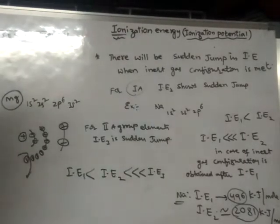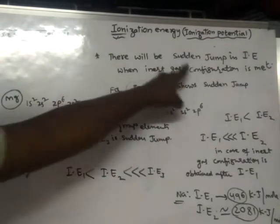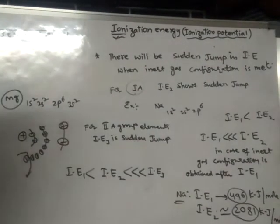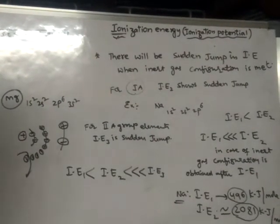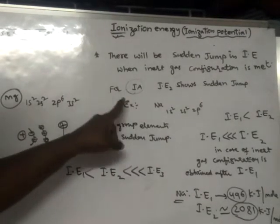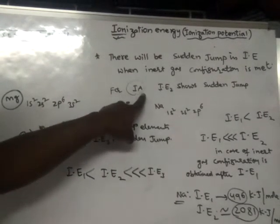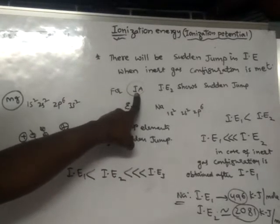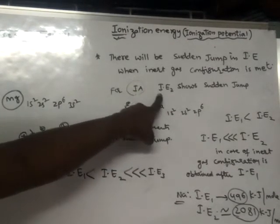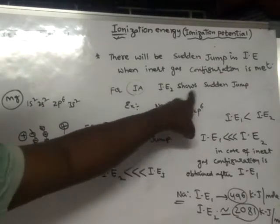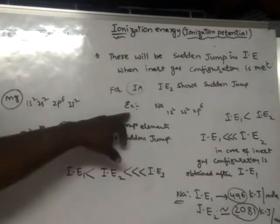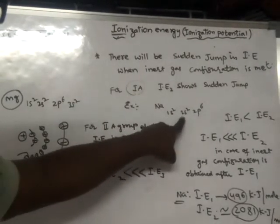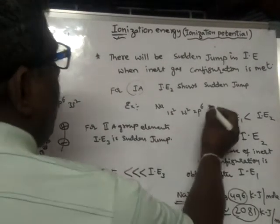There will be a sudden jump in ionization energy when an inert gas configuration is met. For example, take the first group elements. In first group elements, the second ionization energy shows a sudden jump. Take sodium from the first group — its configuration is 1s2 2s2 2p6 3s1.